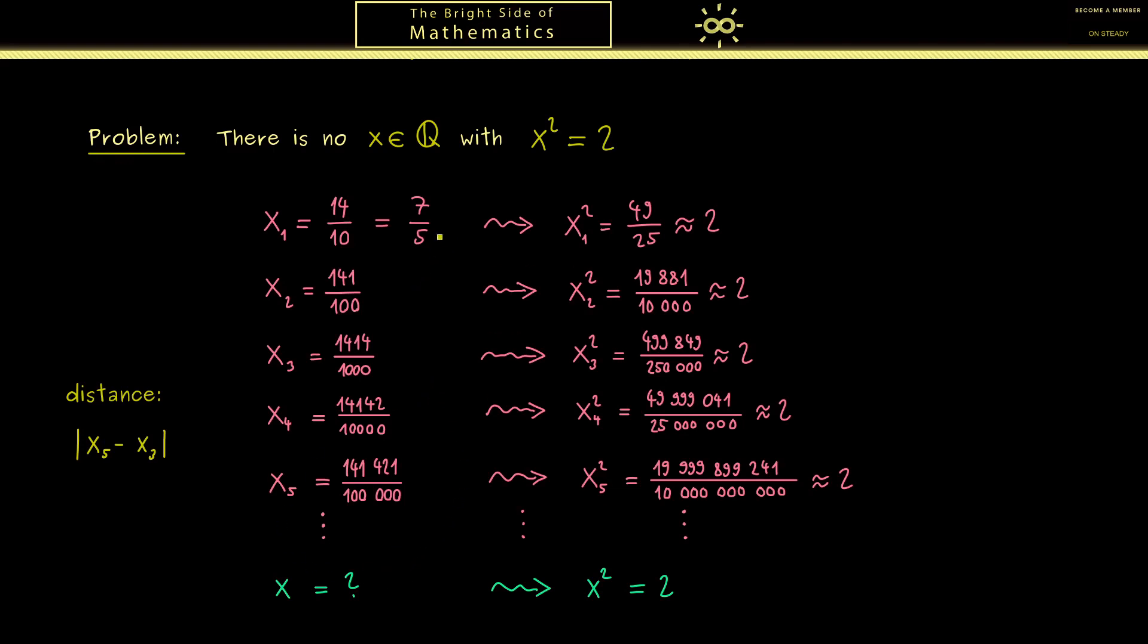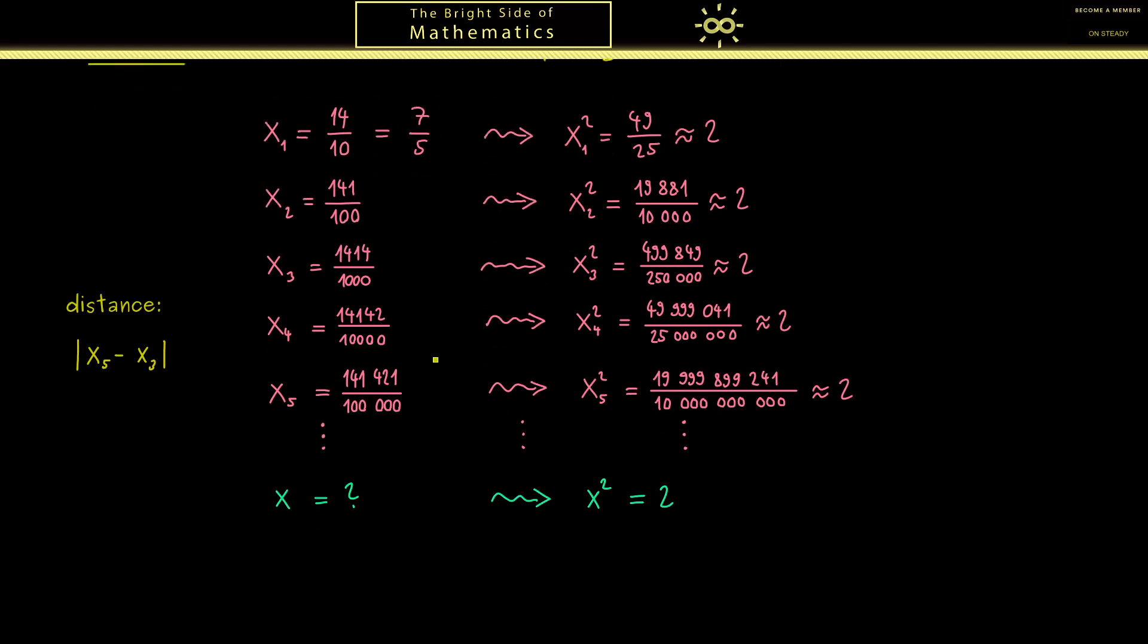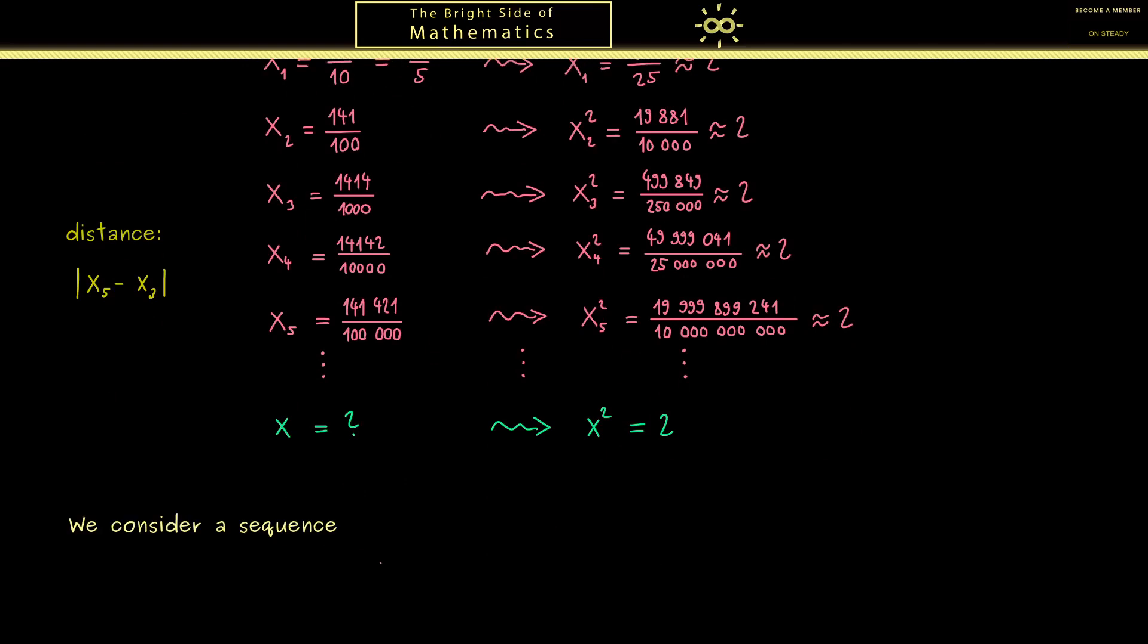However, if we want to do calculus or analysis we really need this property. Therefore, we have to expand the number set even more. Before we do that, let's formulate our example here in an abstract sense. So what we consider is an infinite sequence of numbers denoted by (xₙ)_{n∈ℕ}. And n goes through all natural numbers starting with 1. This one is the common notation one uses for this, and as you can see it's just an ordered infinite list of numbers.